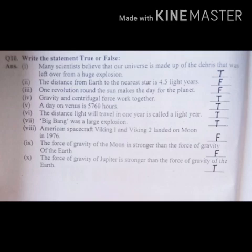Number 3. One revolution round the sun makes the day for the planet. False. It's true statement is: sun ke gird planet ka one revolution is ka one year hota hai.